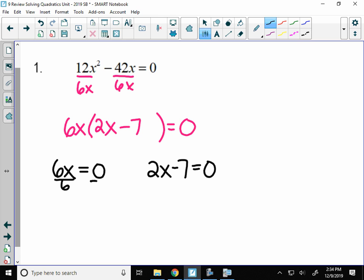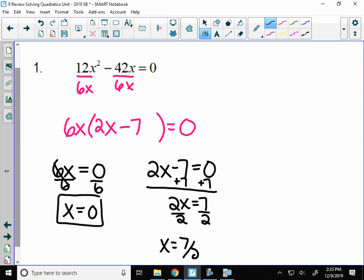On the left one here, I just have to divide by 6, and I get one solution is x equals 0. And then over here, I would add 7, and then divide by 2. So the solution here would be 7 over 2, or 3 and a half. And that's it for the first problem.